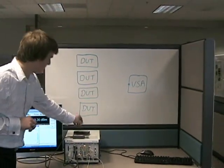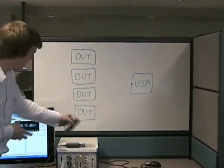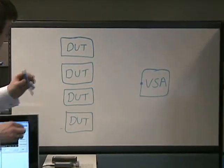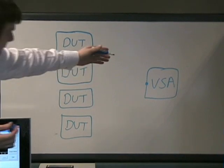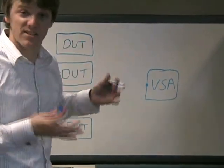So take a look at the block diagram with me right here. As you can see, I have four devices under test and a single vector signal analyzer. Now obviously, I don't want to buy more vector signal analyzers because it's expensive.